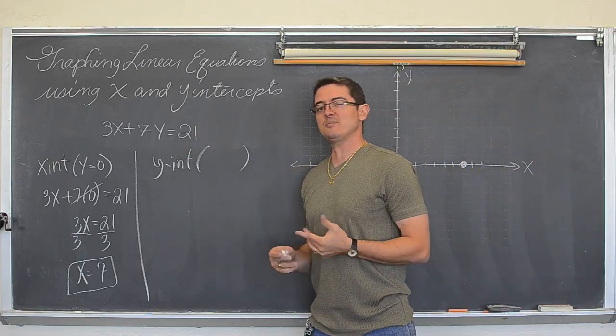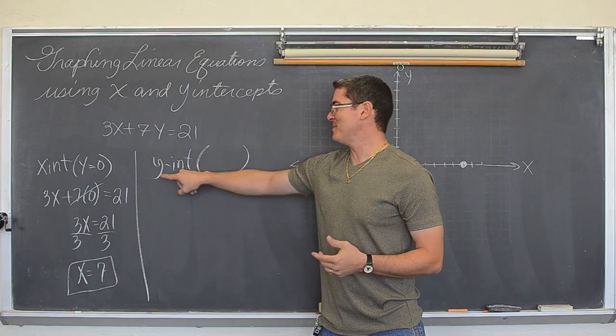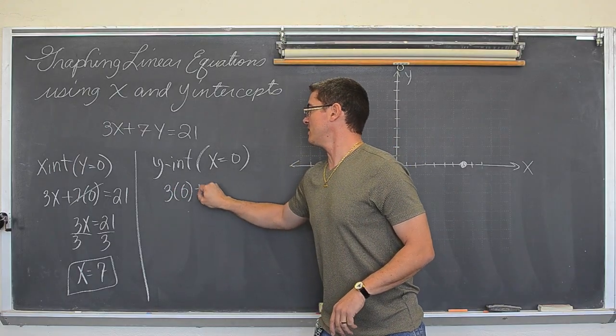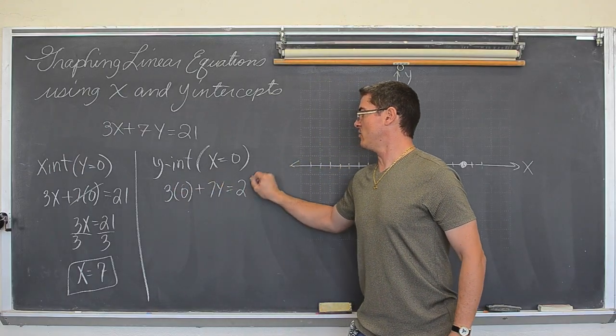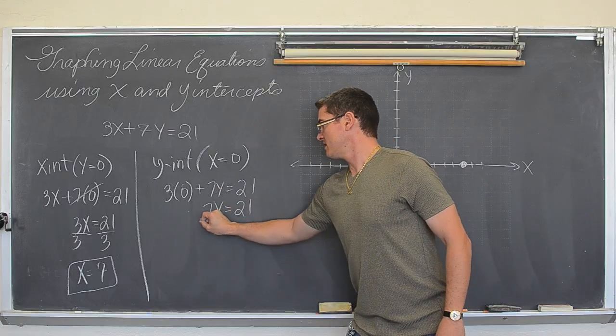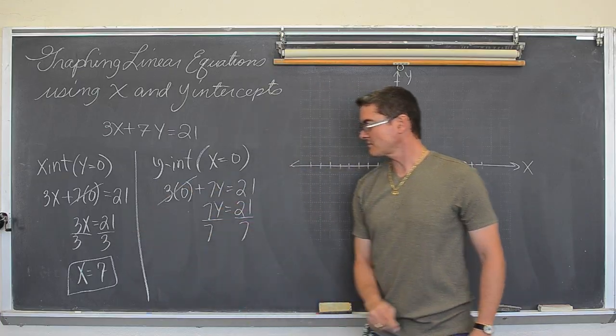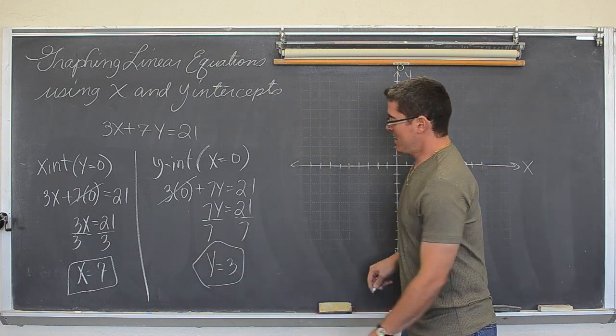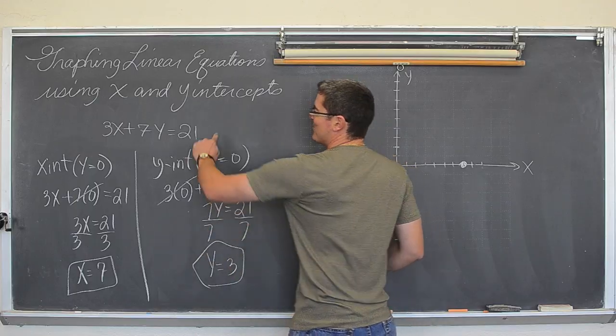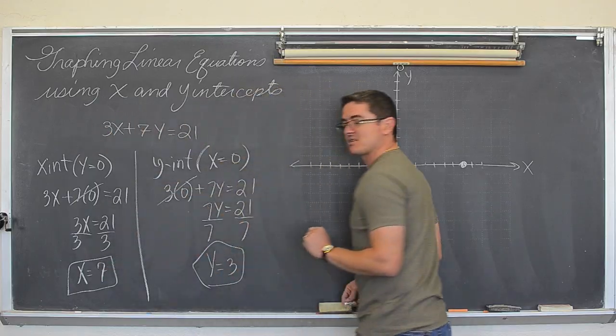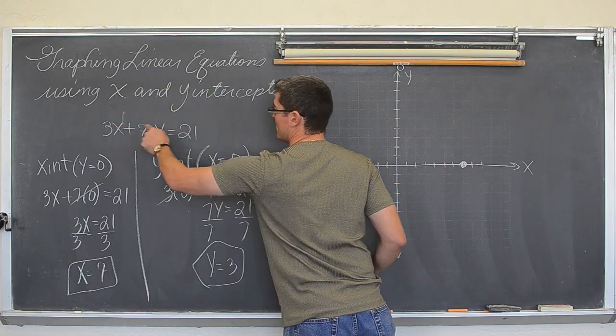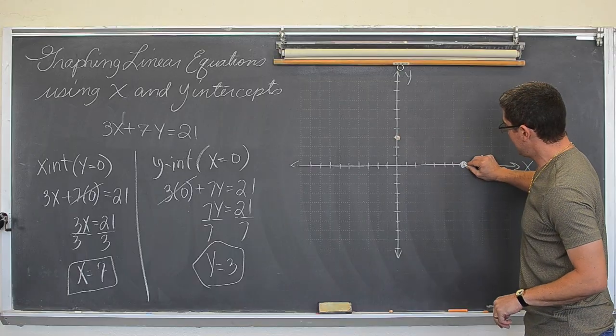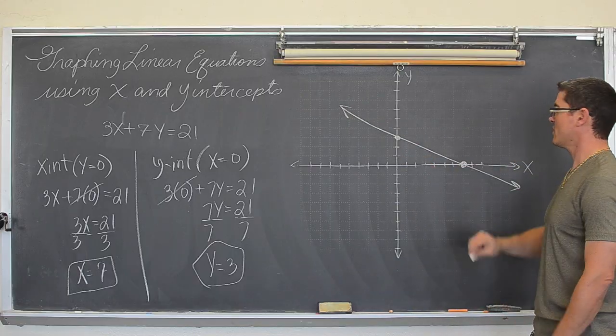So, for a y intercept, you let x equal 0. Plug it into your equation. 3 times 0 plus 7y equals 21. 7y equals 21. Divide both sides by 7 and you get y is equal to 3. So, what is that? Anyway, it looks like a muffin. This equation is going to cross the x axis at 7. This equation, this linear equation with exponents of 1, is going to cross the y axis at 3. There we go. There is our line.